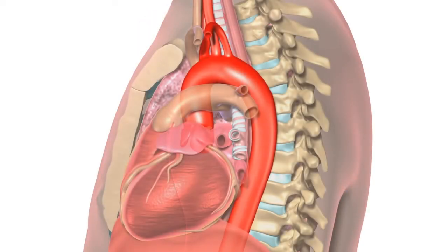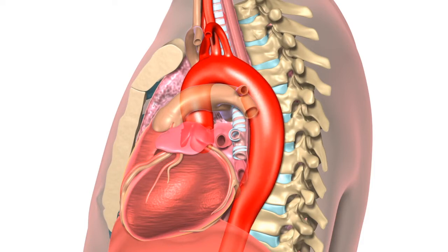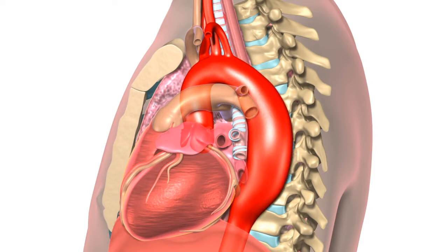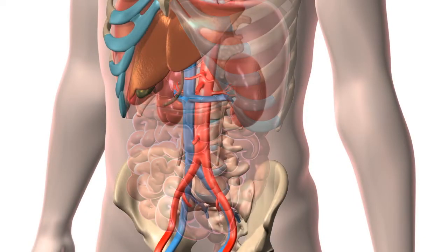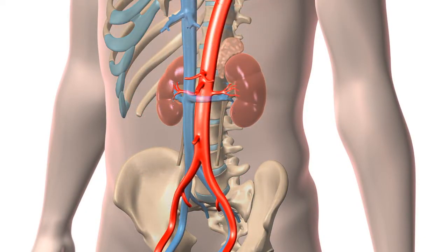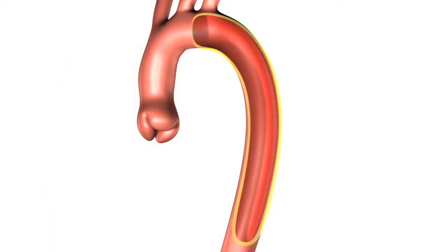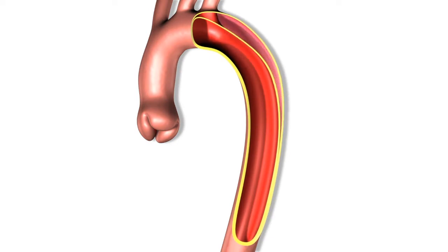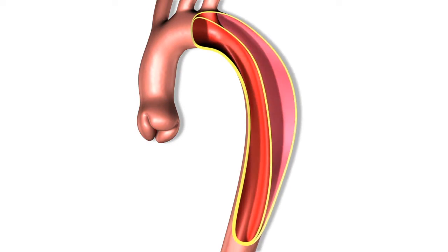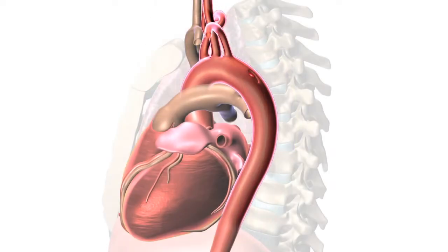There are two main types of aortic aneurysms: thoracic aortic aneurysm, which affects the sections of the aorta in the chest, and abdominal aortic aneurysm, which affects the lower part of the aorta extending through the abdominal area. If an aneurysm becomes too large, it may tear — this is called a dissection. An aortic dissection is extremely dangerous and can cause life-threatening bleeding.